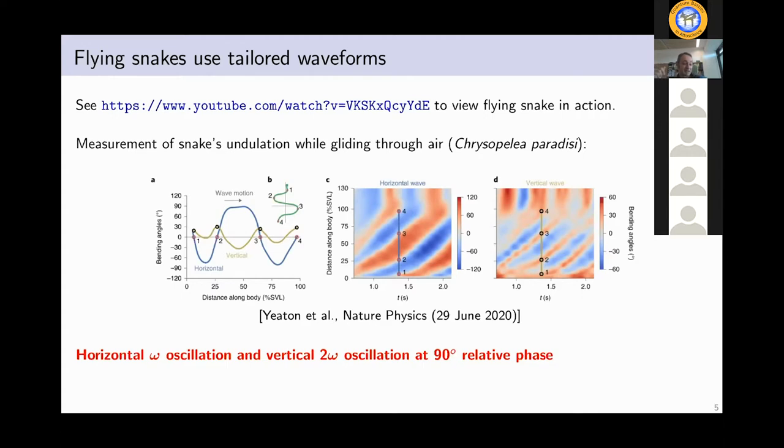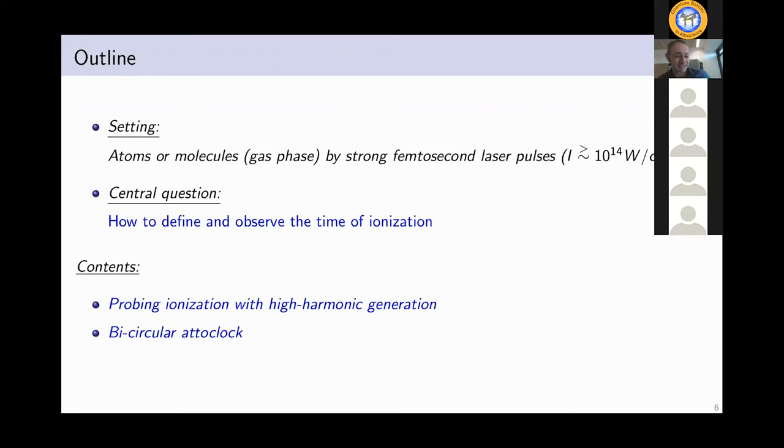And they even find out there is a well-defined phase relation between the two waves of 90 degree relative phase. And they argue that the purpose of this kind of two color waveform is to keep the snake stable as it glides through air. Okay, so that I think is a very nice example of a two color waveform. Of course, our setting is a bit different. We look at atoms and molecules in the gas phase ionized by strong femtosecond laser pulses.